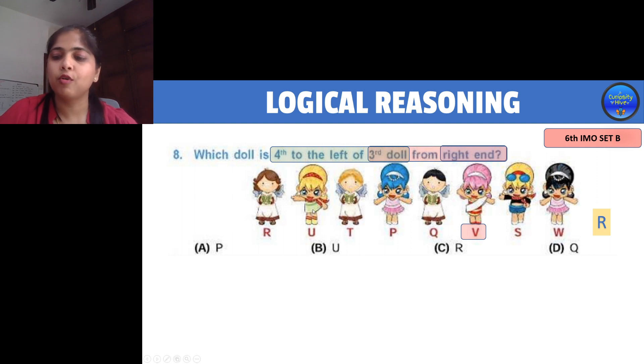This is the third doll and this is the left side. One, two, three, four, fourth to the left is doll U. So your right answer is option B, doll U. This is how you have to solve these arrangement questions.